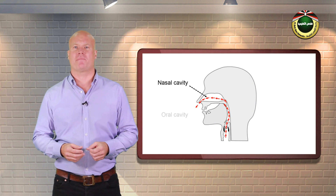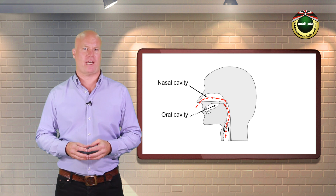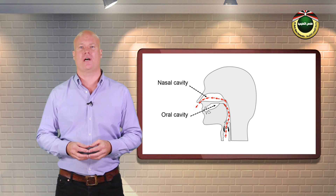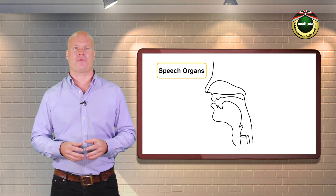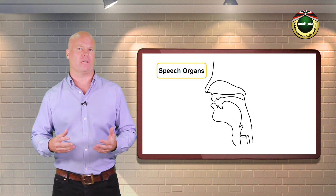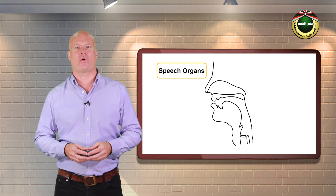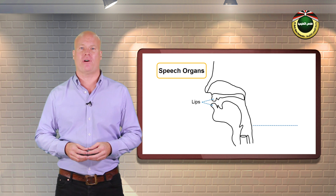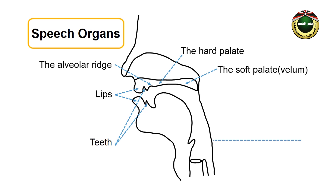This diagram illustrates where each speech organ is located. A speech sound is produced as the result of a body of air which moves through the lungs and is released through the mouth, or the oral cavity, or the nose. When producing sounds, some organs are activated and involved such as the lips, the teeth, the alveolar ridge, the hard palate, the soft palate, the velum, the pharynx,